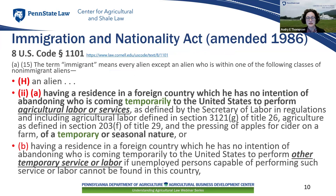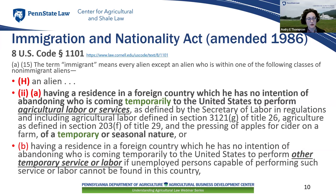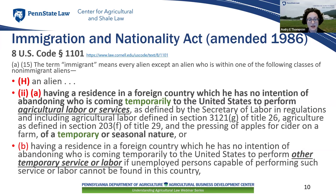The Immigration and Nationality Act was amended in 1986 by the Immigration Reform and Control Act. That amendment established a non-immigrant visa classification for a worker having a residence in a foreign country which he has no intention of abandoning, who is coming temporarily to the United States to perform agricultural labor or services of a temporary or seasonal nature. The statute includes four parameters to define agricultural labor: defined by the Secretary of Labor through regulation, Title 26 (the Internal Revenue Code), Title 29 (the Fair Labor Standards Act), and the statute also specifies that pressing apples for cider on a farm is agricultural labor.